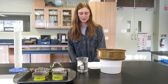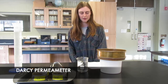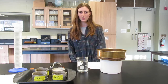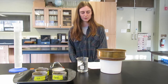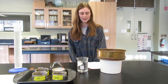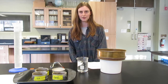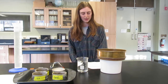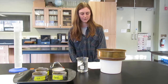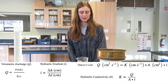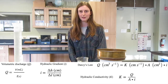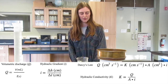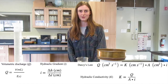Using special equipment called the Darcy permeameter, we can determine this by the falling head method or a constant head method. We will demonstrate the constant head method on the material, and the volumetric discharge will be measured from the outflow. By knowing the volumetric discharge, hydraulic gradient, and surface area of the sample, the hydraulic conductivity of each material can be determined through the rearranged Darcy's law.